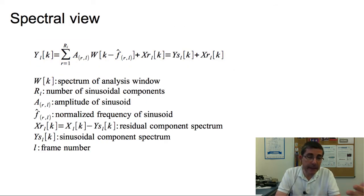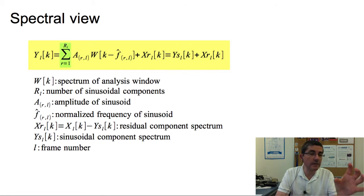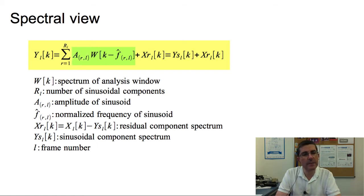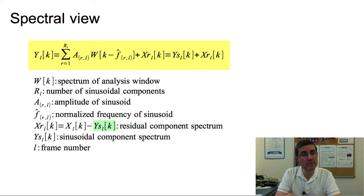It is much better, at least from our point of view, to show this model from the spectral point of view, because that is where we are going to be developing all these models. So here we see the sum of the sinusoids as the sum of the transform of the windows shifted to a frequency and scaled to the amplitudes of these sinusoids, plus the spectrum of the residual component. The spectrum of this residual component is obtained by subtracting the spectrum of the sinusoids from the spectrum of the original signal.